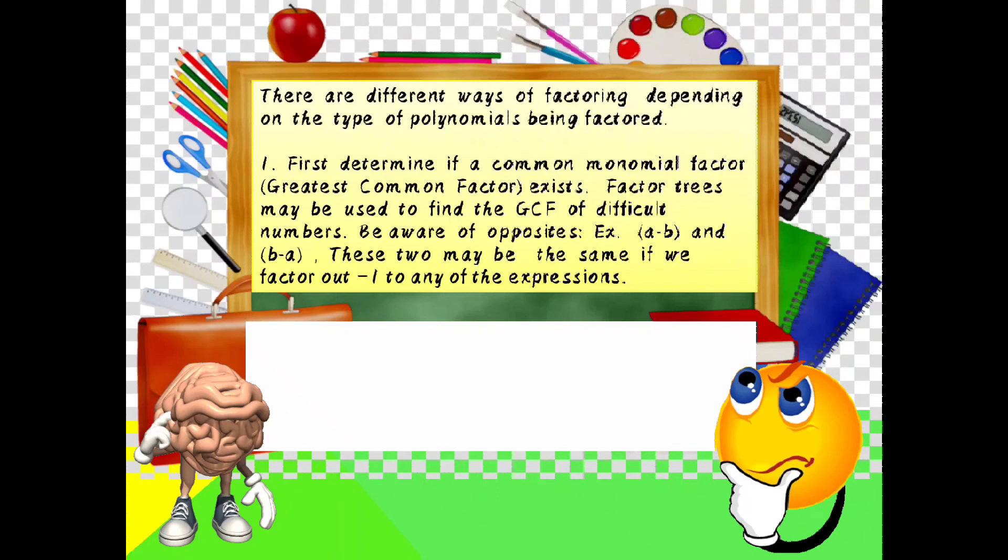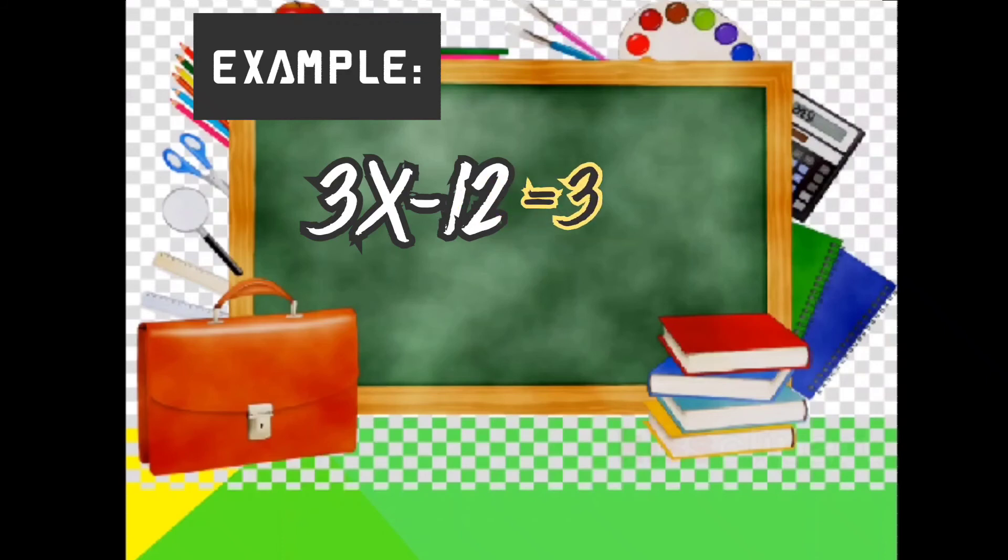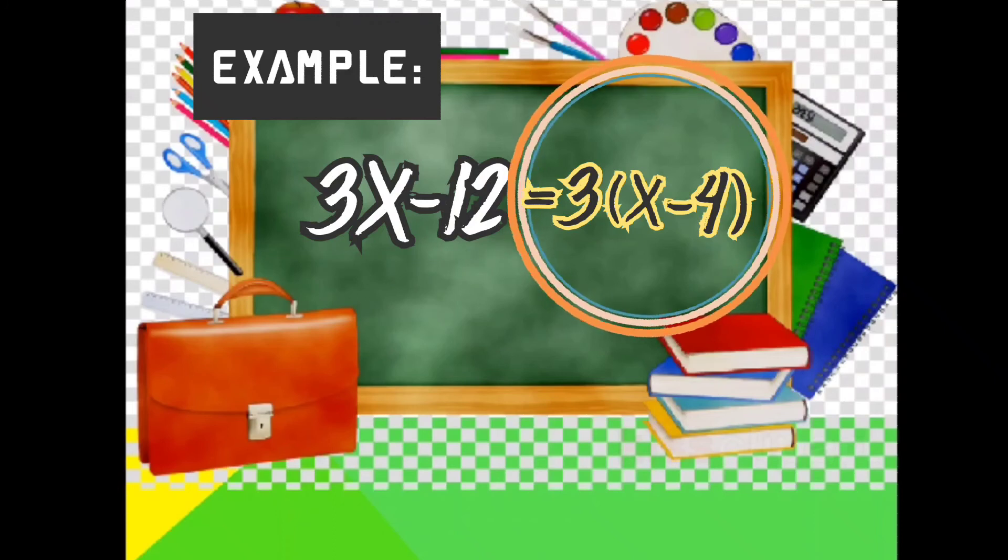So let us try examples. Example, 3x minus 12. Mag-iisip tayo ng number na pwede natin i-divide sa dalawang term. So that is positive 3. So 3x divided by 3 is equal to x. Then negative 12 divided by 3 is equal to negative 4. So ang factor ng 3x minus 12 is equal to 3 times x minus 4.